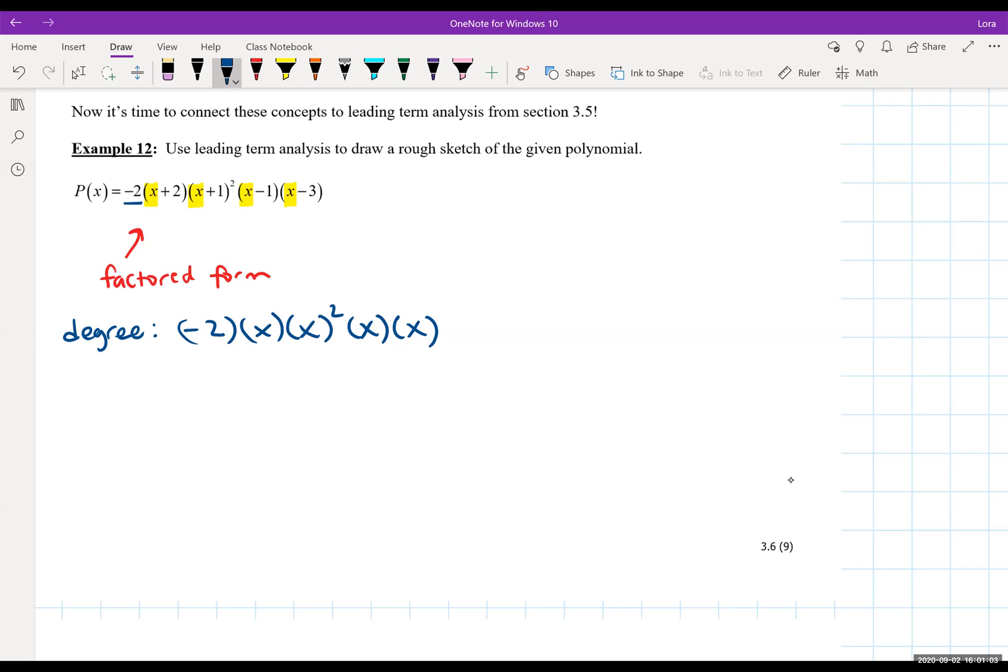I am trying to find the degree, but this is really the leading term of the polynomial. Let's compute this. We have negative 2. Whenever you multiply with the same base, you keep the base and add all the exponents. So we should have 1 plus 2 plus 1 plus 1, which ends up being 5. So we now have a leading term of negative 2x to the 5th.